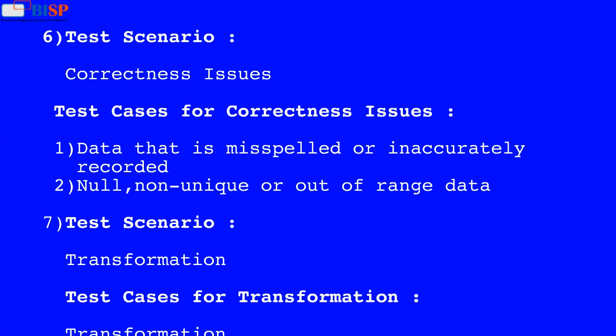Test Scenario 6: For correctness issues. Test cases for correctness issues: 11. Data that is misspelled or inaccurately recorded. 12. Null, non-unique, or out-of-range data. Test Scenario 7: For transformation. Test cases for transformation.